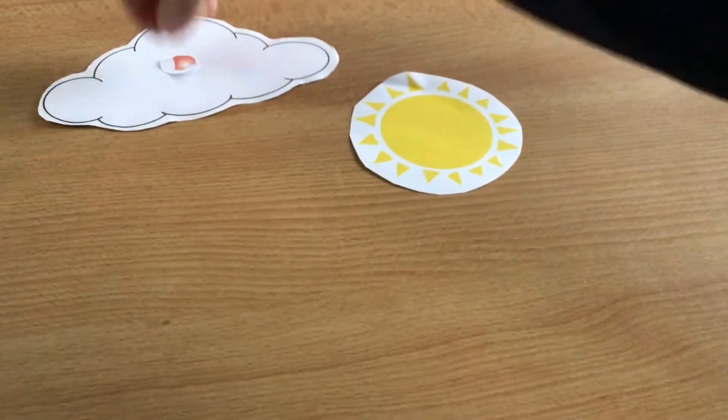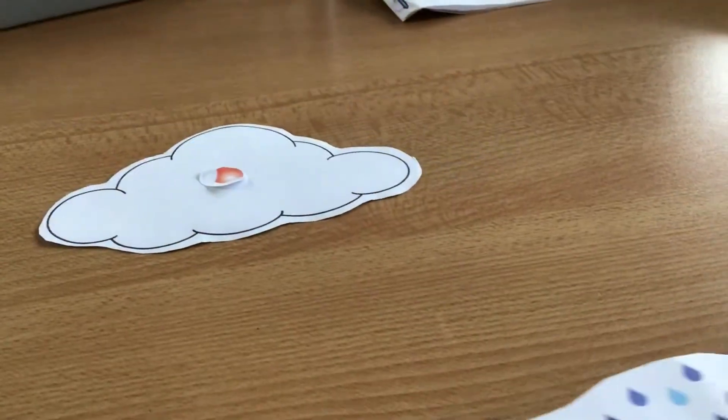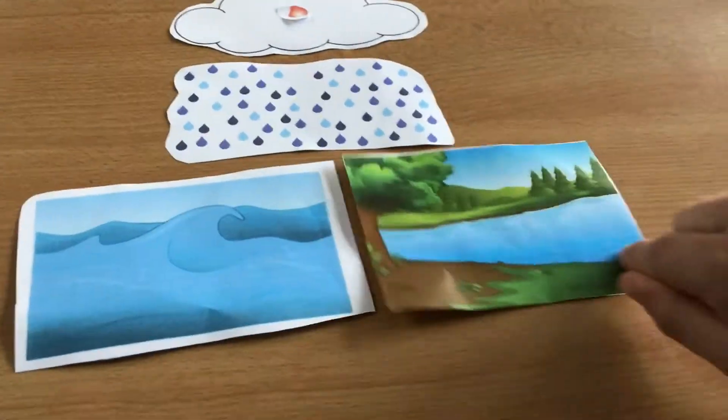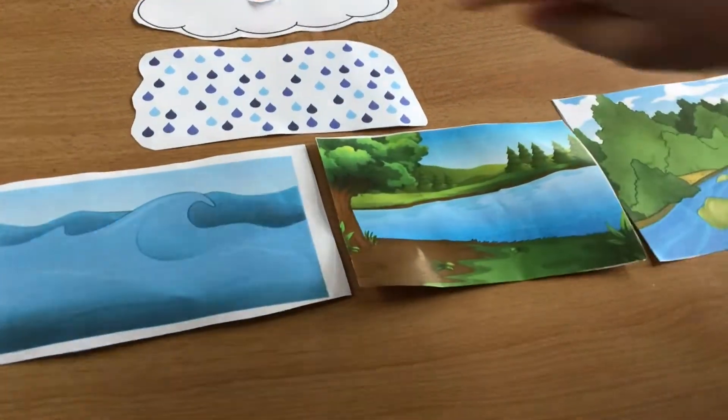That's when I would evaporate back into a cloud. This is called evaporation. As the temperature cools, I fall again as precipitation. You call me rain. Water gets collected in oceans,